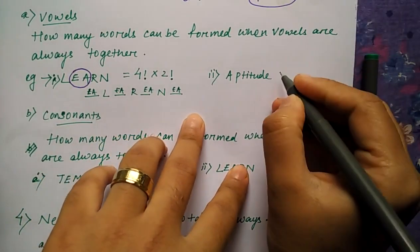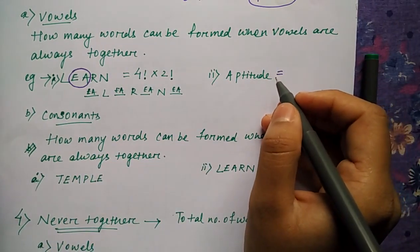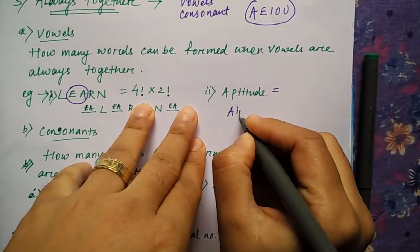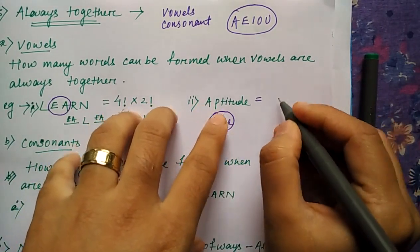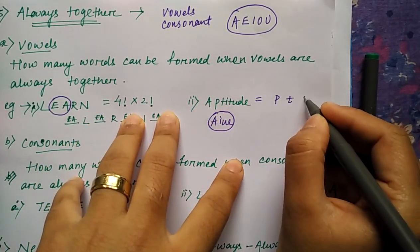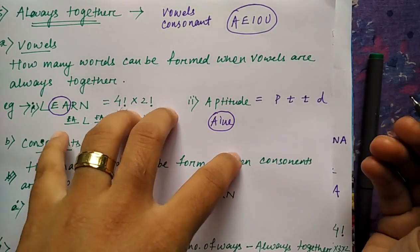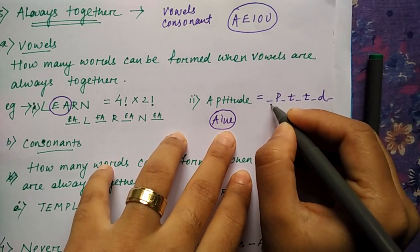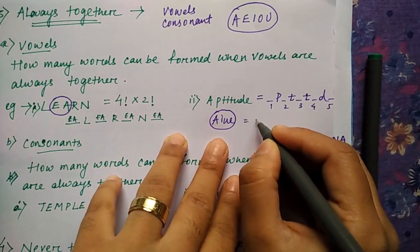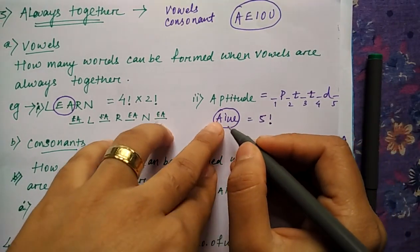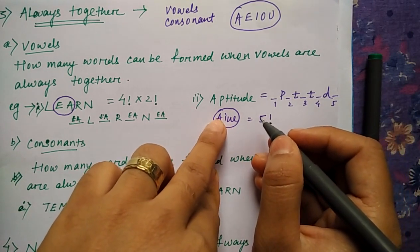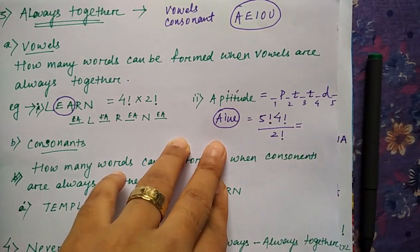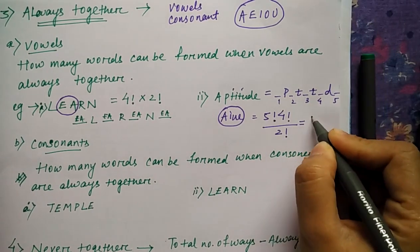For the aptitude example, the word has four vowels: A, I, U, E. Apart from these, the other letters are P, T, T, and D. So A, I, U, E can be kept in 5 different places among the consonants, giving 5 different arrangements. The 4 vowels together form a 4-letter group so they can be arranged in 4 factorial ways. Again, T is repeated, so divide by 2 factorial. The final answer is 1440.